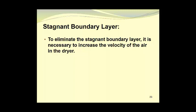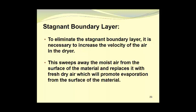To eliminate the stagnant boundary layer, it is necessary to increase the velocity of the air in the dryer. This sweeps away the moist air from the surface of the material and replaces it with fresh dry air, which will promote evaporation from the surface of that material.